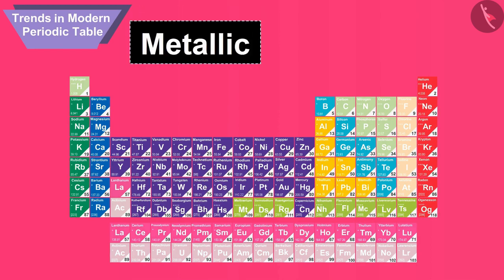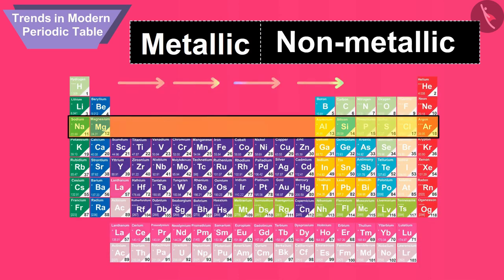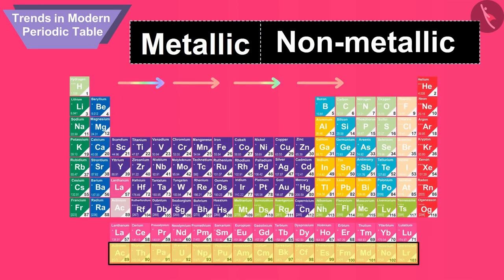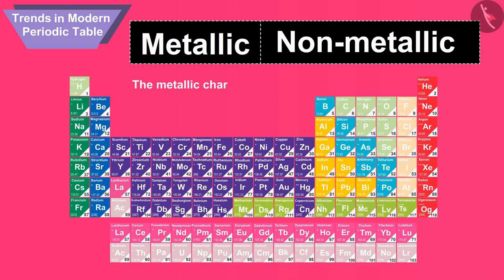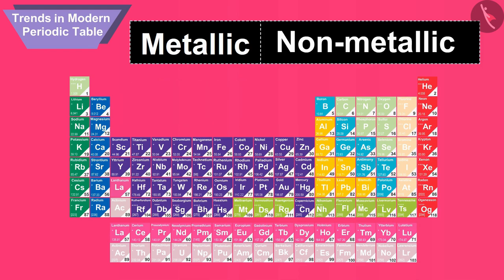Now we will discuss the metallic and non-metallic character in a period. On moving from left to right in a period, the metallic character of the elements decreases. At the same time, the non-metallic character increases. On the left side in a period we have metals, and on the right side we have non-metals.